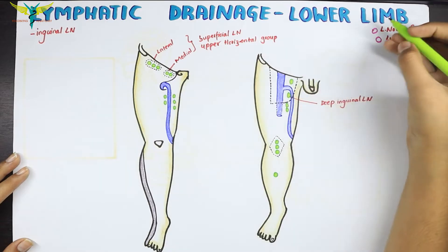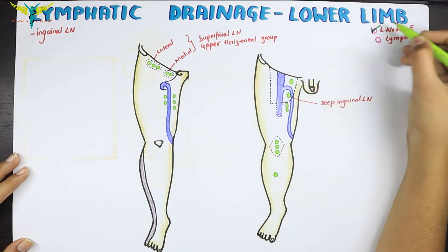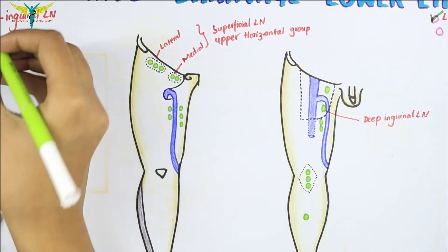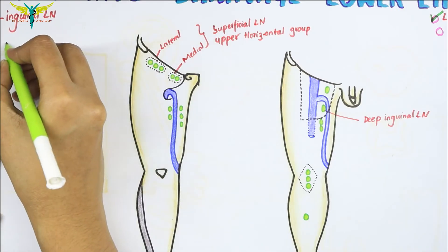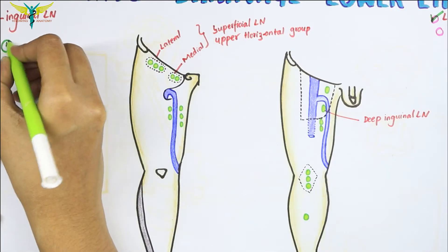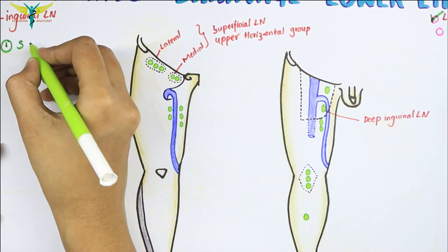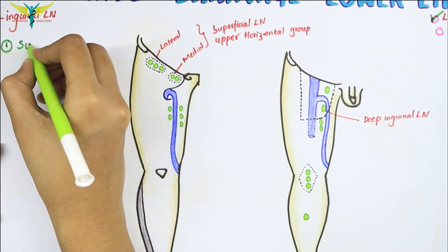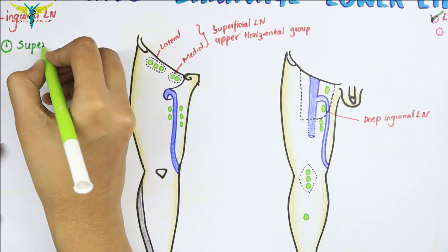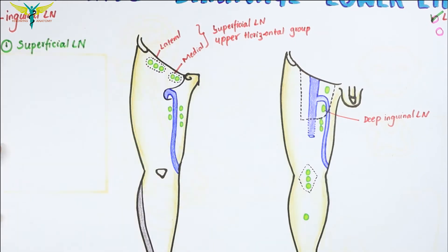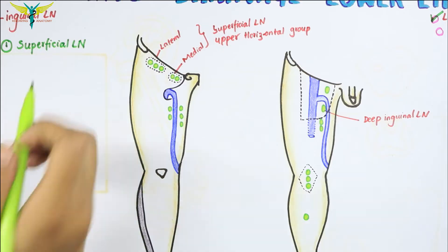Now let's learn about the lymph nodes. The lymph nodes are classified into two types: the superficial lymph nodes and the deep lymph nodes. Let's talk about the superficial lymph nodes now.